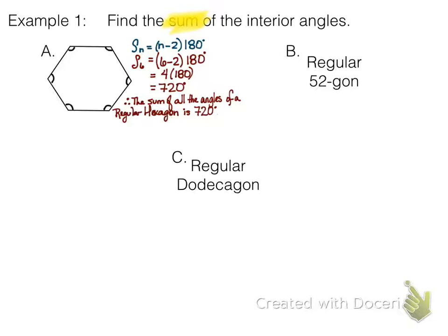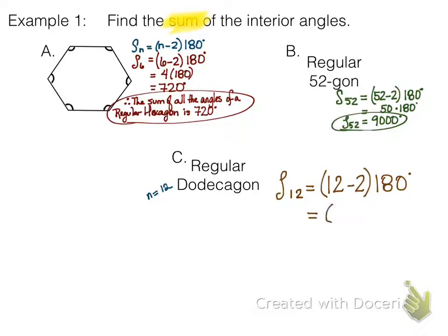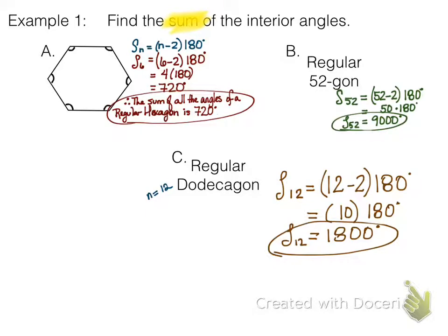Now we're going to do a regular 52-gon. What is n? n is 52. We do 52 minus two, so 50 triangles times 180 gives us 9,000 degrees. And then the dodecagon: n is 12. Twelve minus two gives us 10 triangles, times 180 is 1,800 degrees.